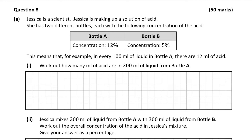We're given an example: for every 100 millilitres of liquid in bottle A, 12 millilitres of that is acid. So 12% of the 100 millilitres is acid. That's going to help us with part A1, which wants us to work out how many millilitres of acid are in 200 millilitres of liquid from bottle A. The concentration of acid in bottle A is 12% of the total amount of liquid.